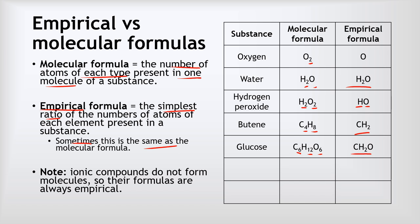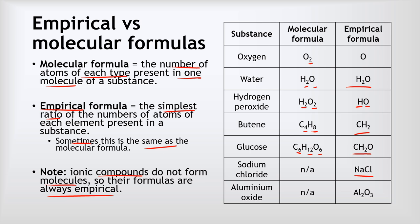It's also worth noting that ionic compounds do not form molecules, so their formulas are always empirical. For example, sodium chloride doesn't have a molecular formula, but the empirical formula is NaCl. Aluminium oxide, again, doesn't have a molecular formula because it's ionic, but its empirical formula is Al2O3.